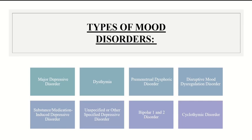You guys might know most of these because you're all intertwined with the mental health stuff. Major depressive disorder, otherwise known as depression, is obviously the main one. Dysthymia is lower-level depression that lasts for more than two years and it's not as severe. Premenstrual dysphoric disorder is when you have depression symptoms due to the onset of your period.